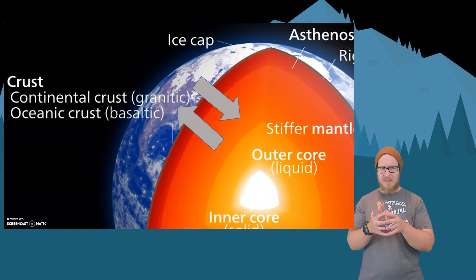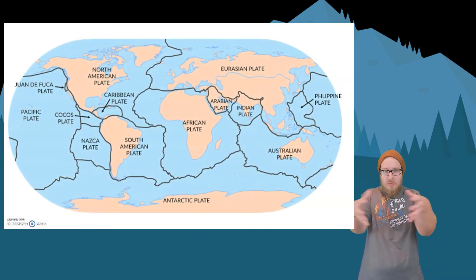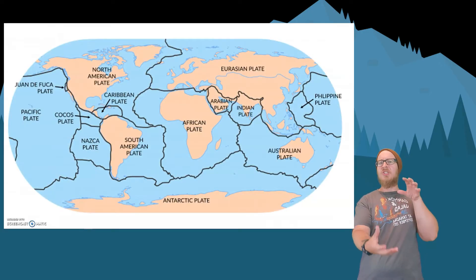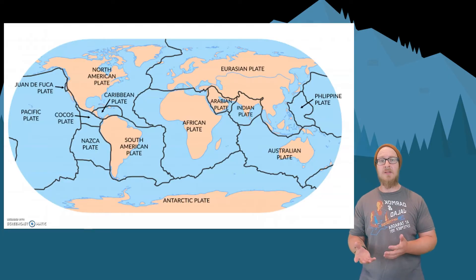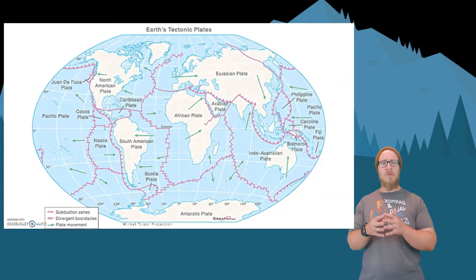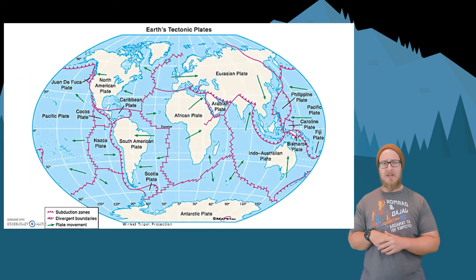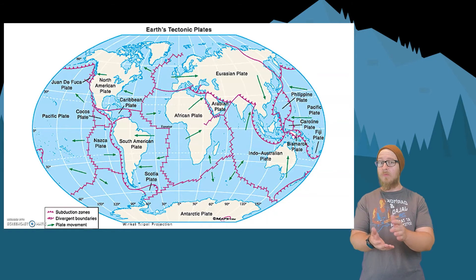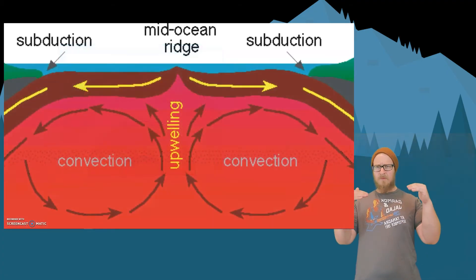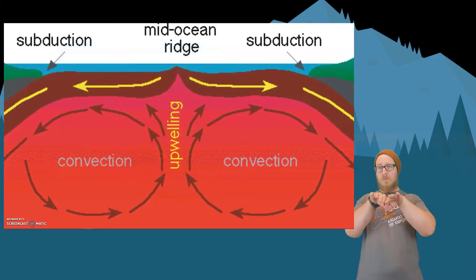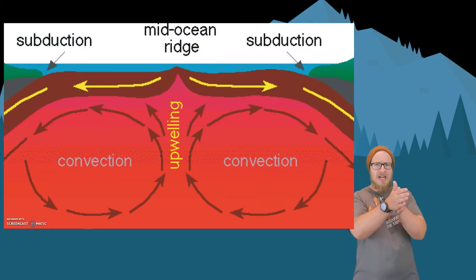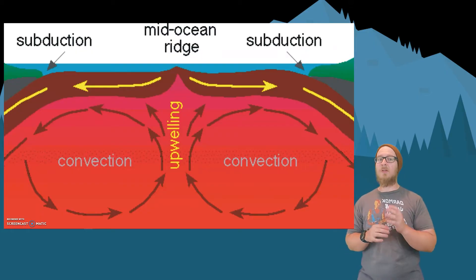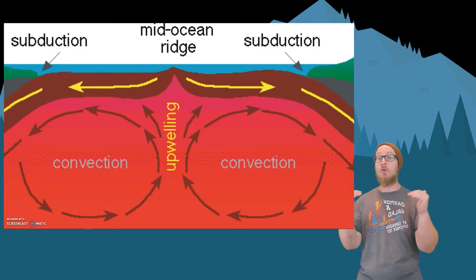What's important to understand is that our crust is not one giant piece of rock. It's composed of large slabs that we call tectonic plates, and these plates move around in all sorts of directions. Plates can move towards each other, away from each other, or they can slide alongside each other.